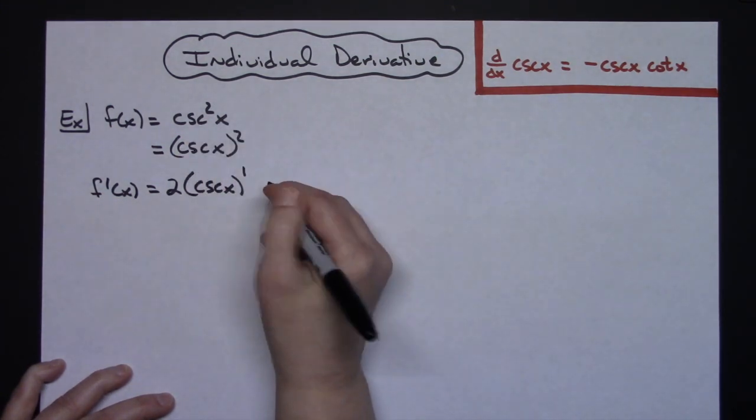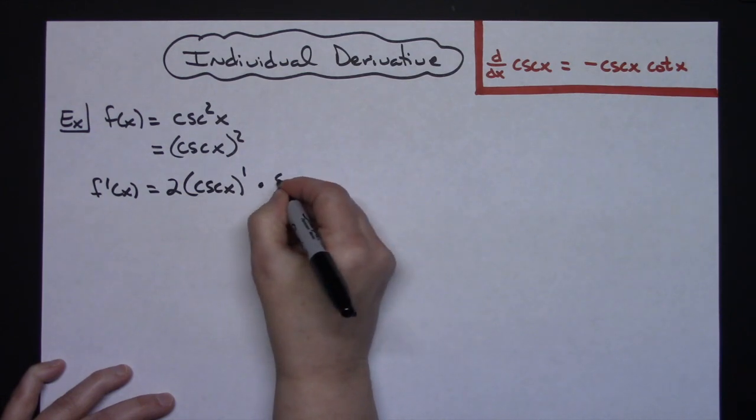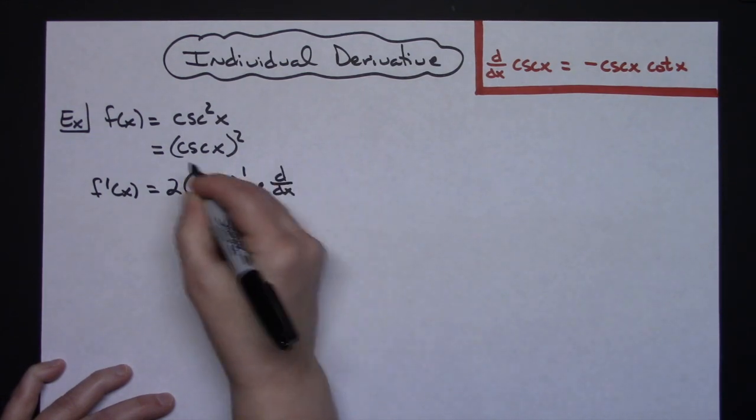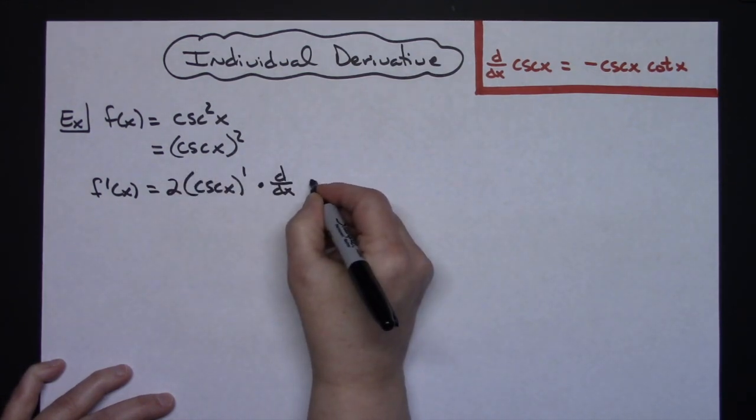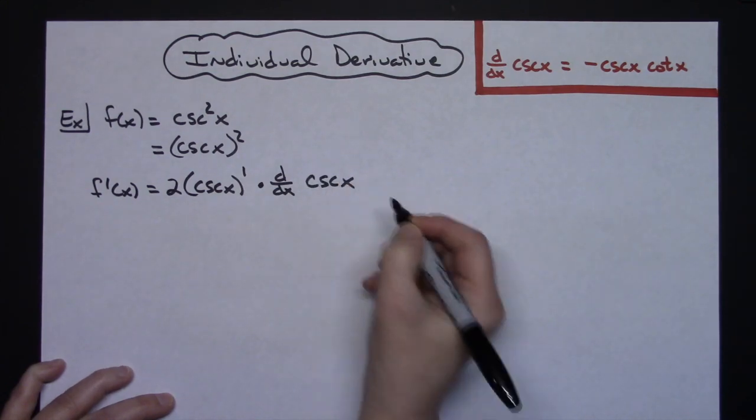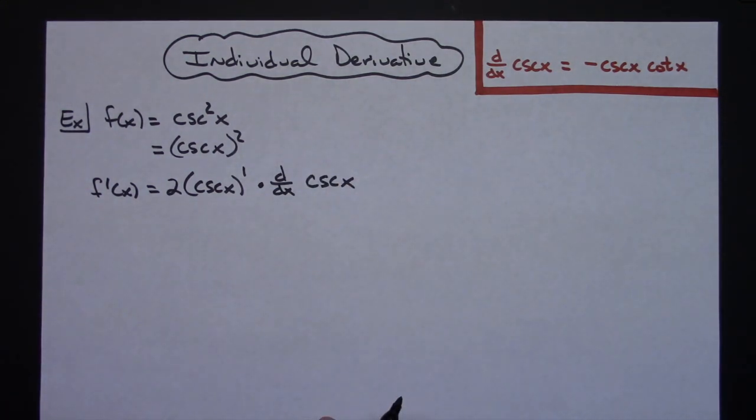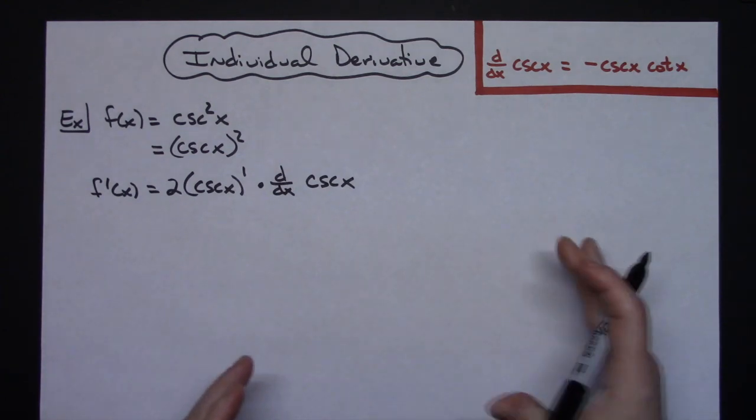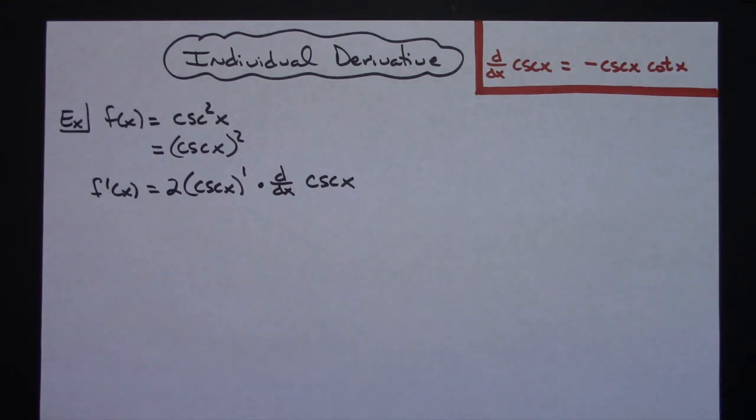So cosecant x, subtract 1 from that exponent. And then because I've got an inside and an outside, take the chain rule and take the derivative of the inside function, which is cosecant x. I always use that d/dx notation in case there's multiple chains. You won't drop any of your chains that way.